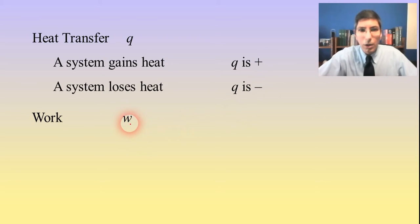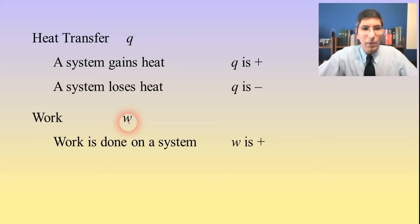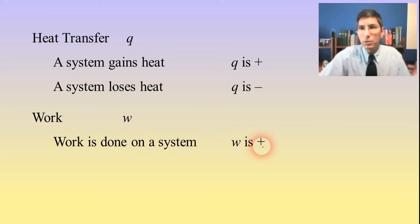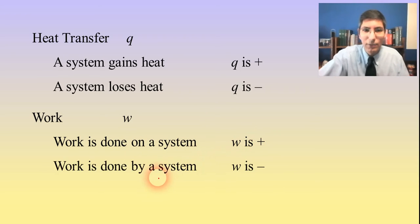Work is denoted by the letter W. If work is done on a system, W is going to be positive. Some students have a little trouble keeping that straight — if work is done on a system, it's positive.